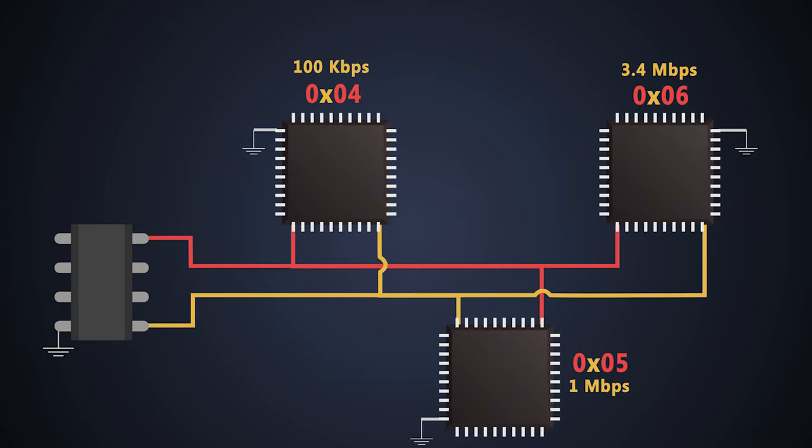For example, slave 1 supports up to 100 kbps speed, slave 2 supports up to 1 mbps speed, and slave 3 supports up to 3.4 mbps speed. So the bus will be configured for standard mode, because all slave devices do support 100 kbps.